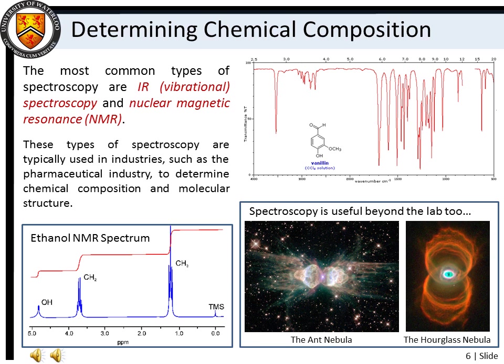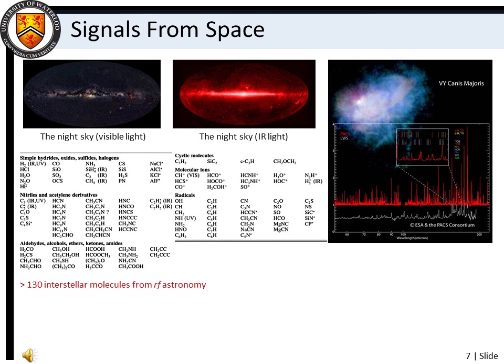Spectroscopy is, however, useful beyond the laboratory. For example, have you ever wondered how it is that we know the velocities and compositions of distant stars, nebulae, or galaxies? Earth is constantly bombarded by electromagnetic waves ranging from low-energy radio and microwaves through to high-energy X-rays and gamma rays. By analyzing the light signals in the radio frequency range, we have been able to identify more than 130 molecules that exist in the regions between star systems.